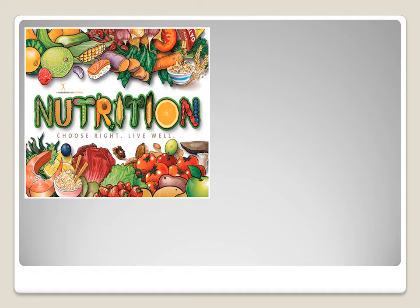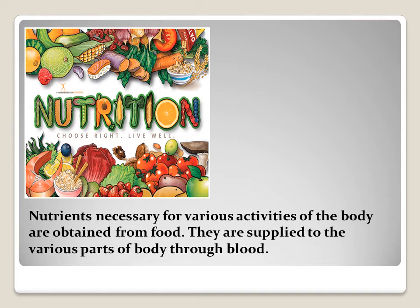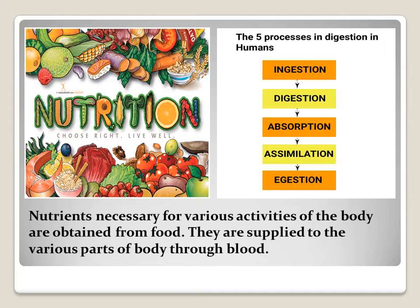Three factors involved in nutrition in animals are: need for nutrients, mode of ingestion, and its use in the body. Nutrients necessary for various activities of the body are obtained from food. They are supplied to the various parts of the body through blood.